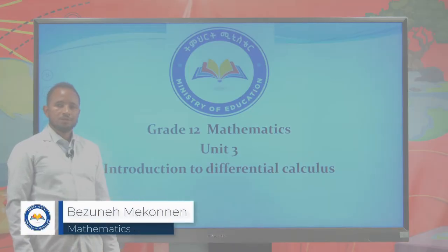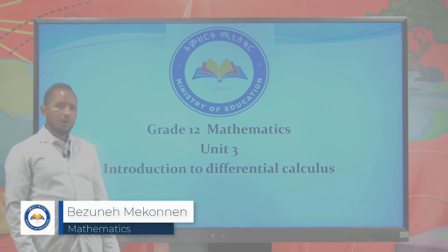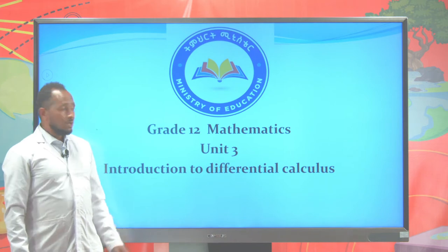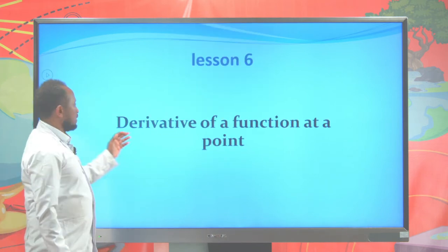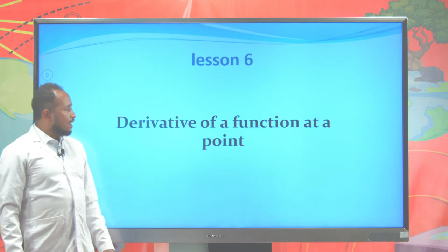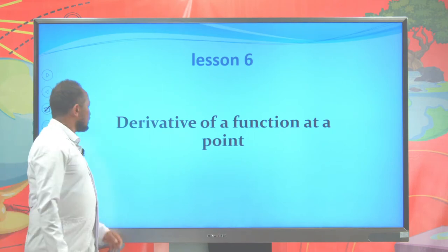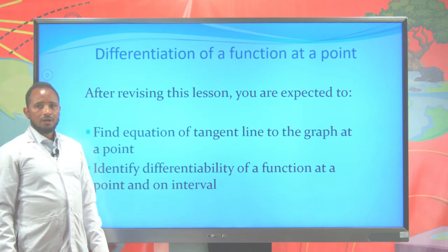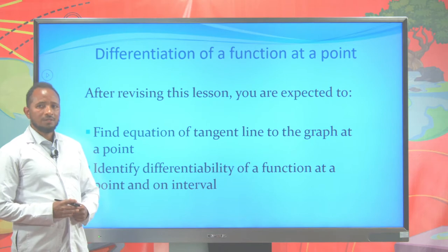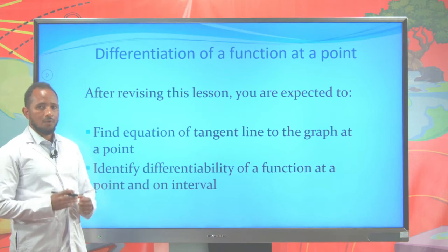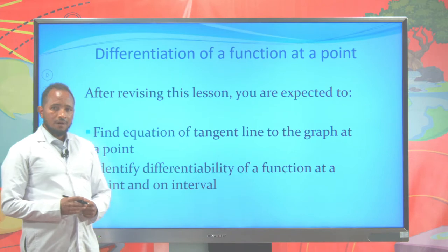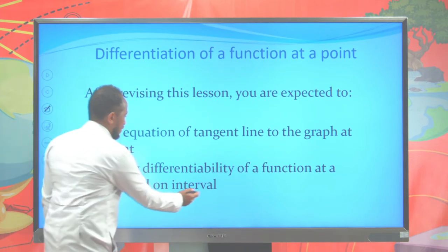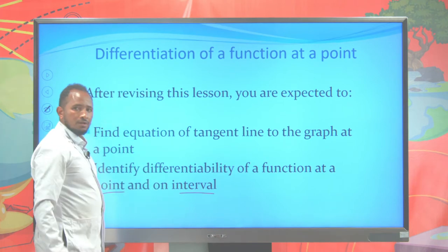Hello, dear students. This is a grade 12 mathematics lesson on Unit 3, Interaction 2, Differential Calculus. Today we focus on derivatives of a function at a point. After revising this lesson, you are expected to find the equation of the tangent line to the graph at a point, and identify differentiability of a function at a point and on an interval. Let's continue to the lesson.